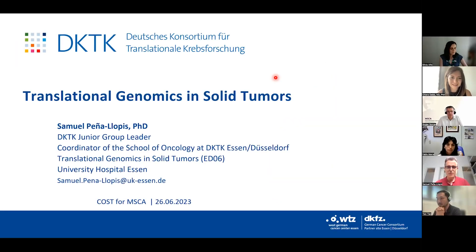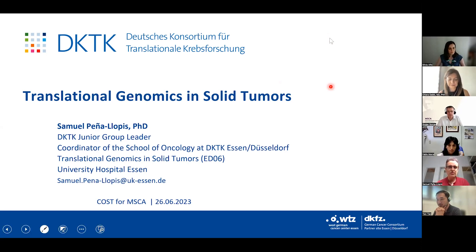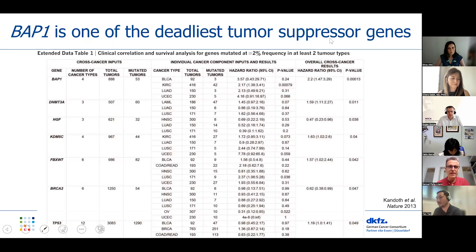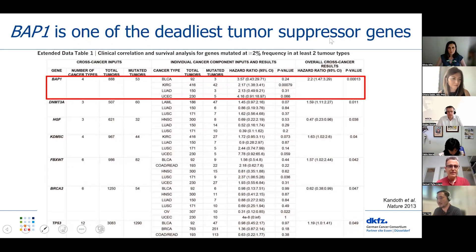Thank you so much for this opportunity to show our research. We are interested in translating genomic data into clinical practice, and we are focusing on BAP1, which is one of the deadliest tumor suppressor genes, found in several cancer types as identified by the TCGA — the Cancer Genome Atlas.